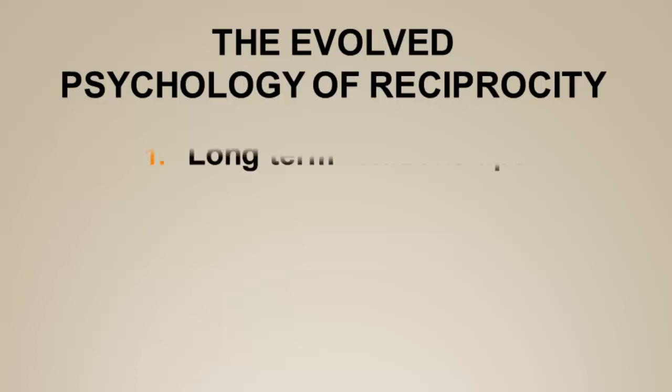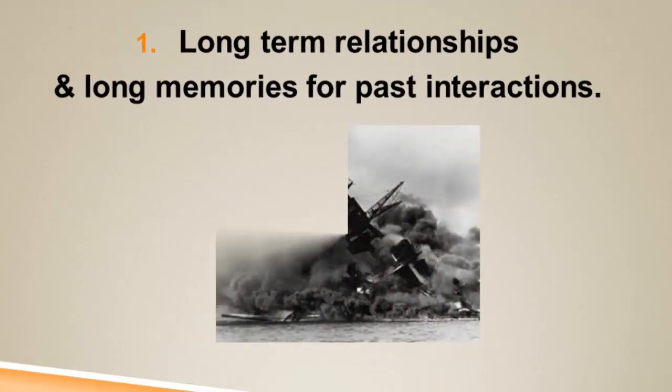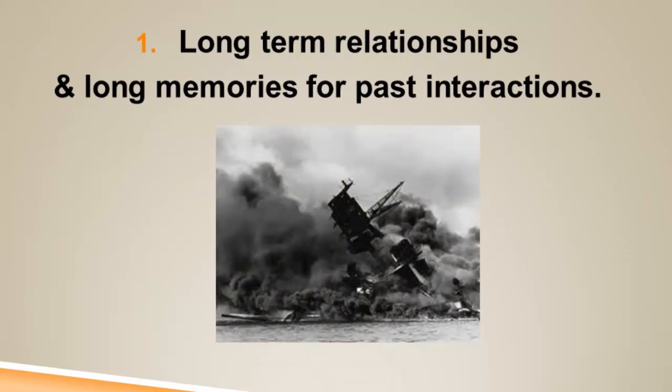Trivers stressed that there was an evolved psychology associated with reciprocity. One thing he stressed was that we needed species with long-term relationships, and it would be very useful to have a long memory for past interactions — in particular, we should remember when people have harmed us, taken advantage of us, and not returned our generosity. This is a photo of Pearl Harbor, which stays very powerful in American memory. It wasn't the occasion of greatest death in World War II, but we remember Pearl Harbor because of the act of deception associated with it. Trivers suggested our brains should have a particular sensitivity to being deceived or taken advantage of — that should stick with us for a very long time.